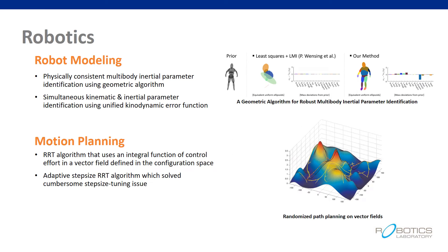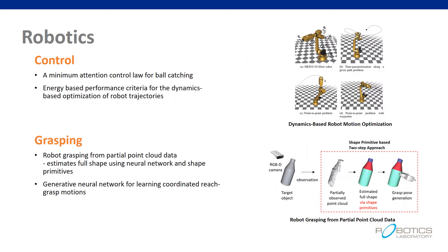The following topics are covered in robotics. In robot modeling, we calibrate inertial and kinematic parameters for control of manipulators. Motion planning methods that incorporate various RRT algorithms are widely studied. With the modeling and planning methods mentioned beforehand, we study various control algorithms. Also, grasping algorithms using neural networks are being studied.